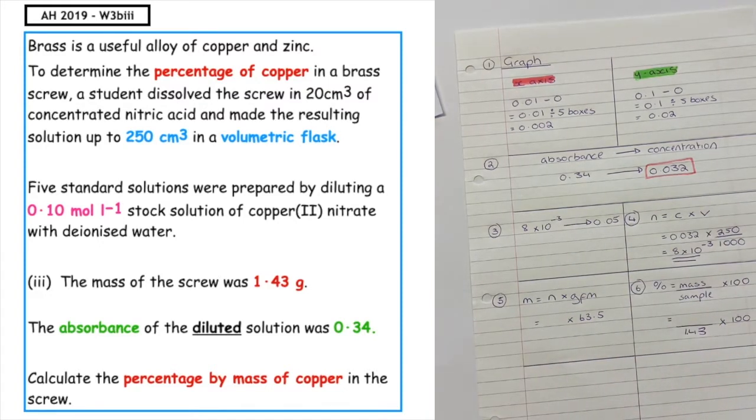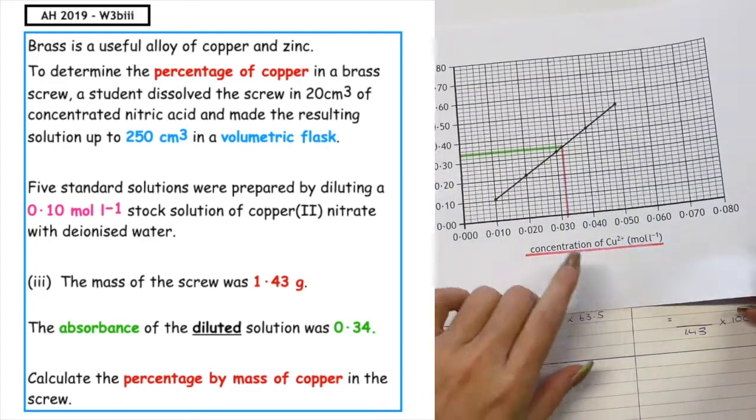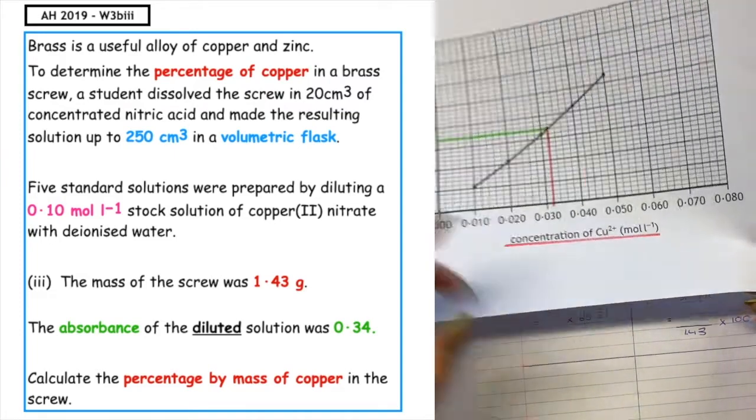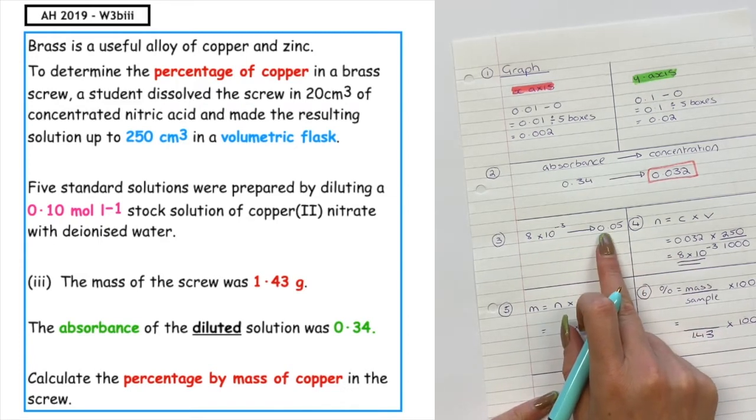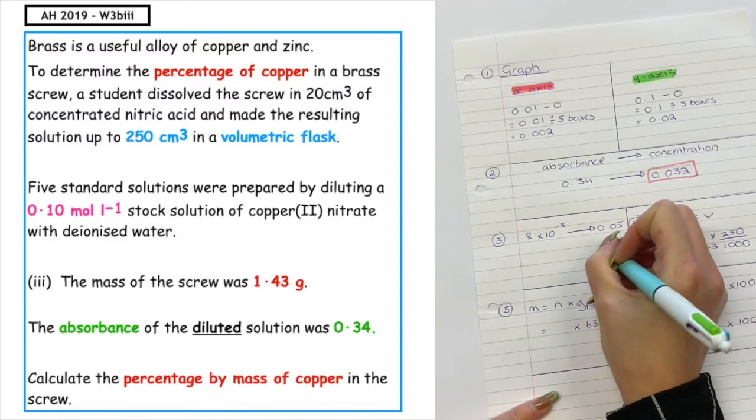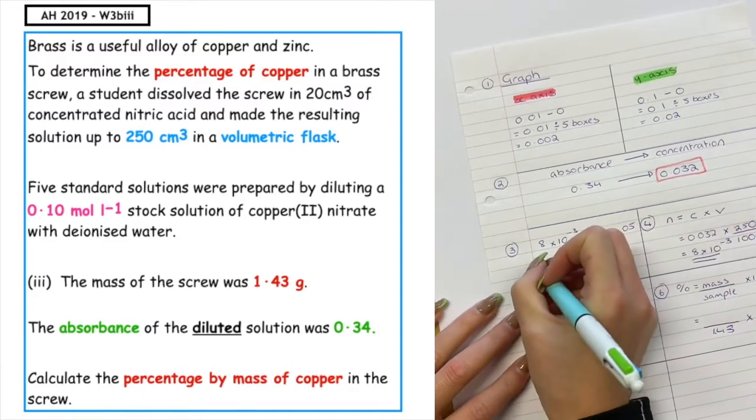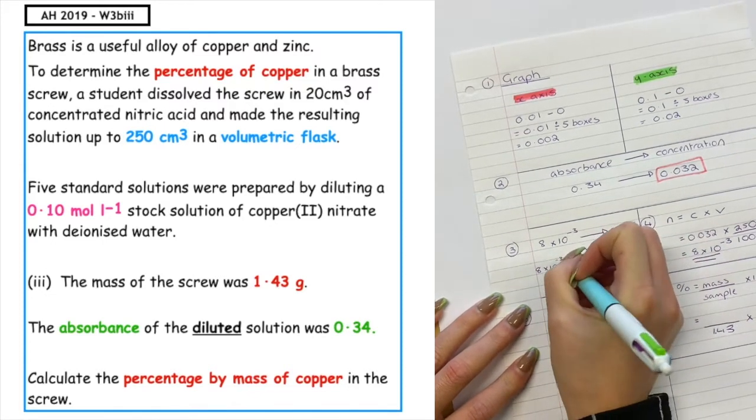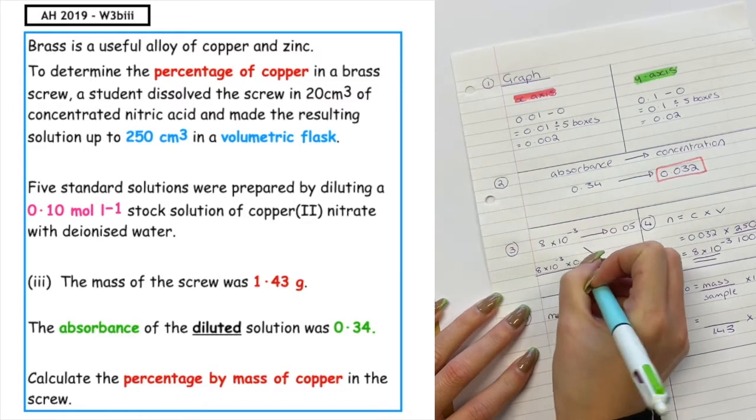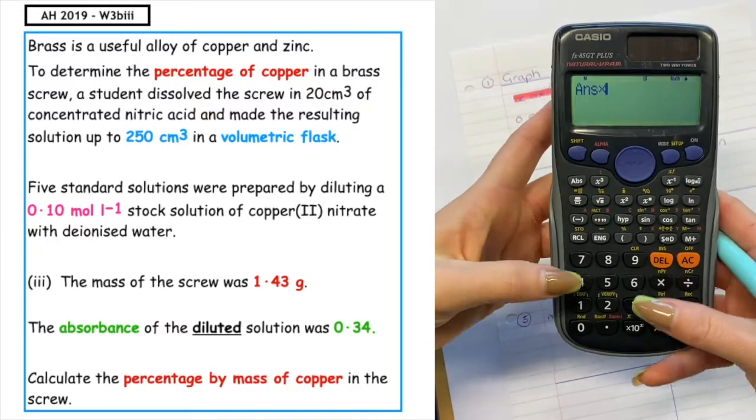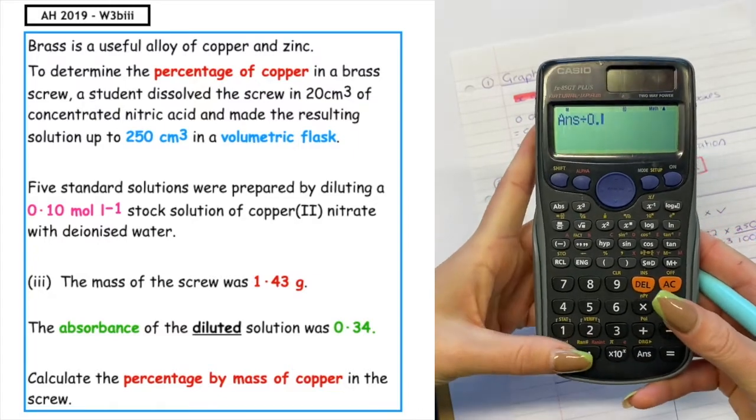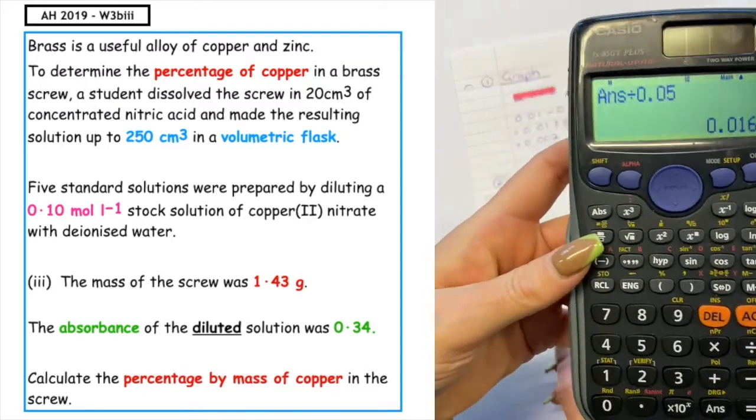If we look at the information in the question, it tells us that five standard solutions were prepared by diluting a 0.1 mole per liter stock solution. This was for a 0.05 mole per liter stock solution. So what we have to do is we actually have to scale that for 0.1. If that number of moles is found in 0.05 mole per liter, we need to scale for 0.1. So we would cross multiply. The math would be 8 times 10 to the minus 3 times 0.1 divided by 0.05. If I pop that into my calculator, times by 0.1 equals divided by 0.05, that will give me that number of moles.